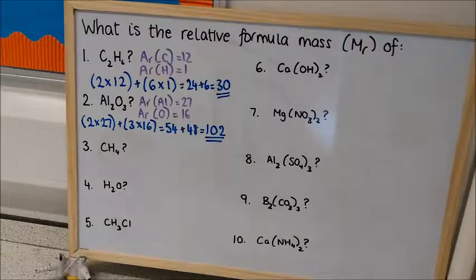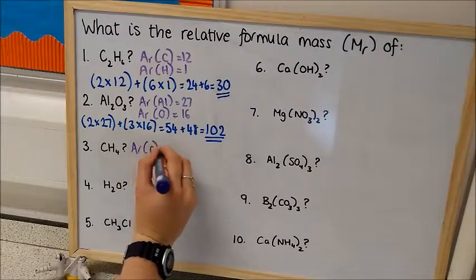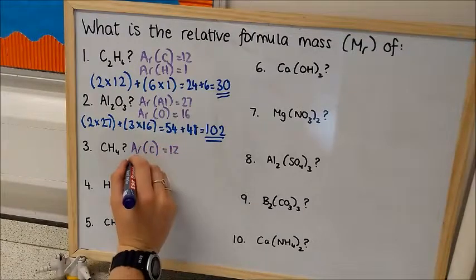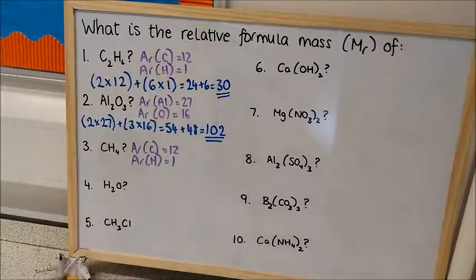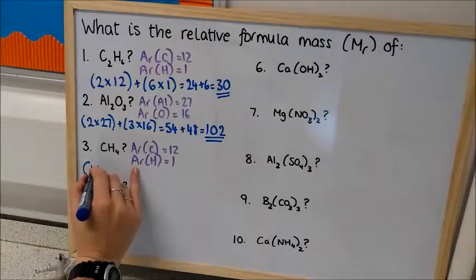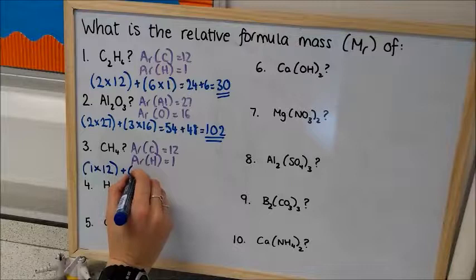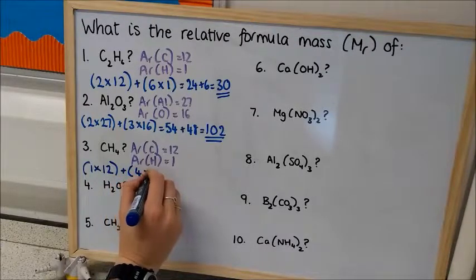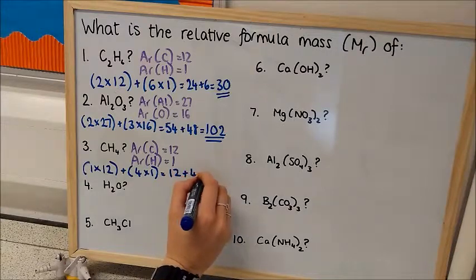So once again, I've got carbon with a mass of 12, and hydrogen with a mass of 1. And even when you've only got 1 of a certain element, I would still do the bracket and put the numbers in it, just because it tends to avoid you making a silly mistake later on, particularly when you have a more complicated question.